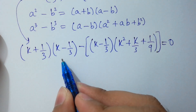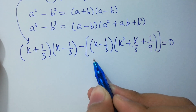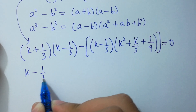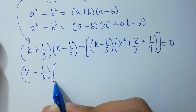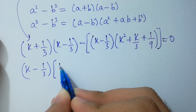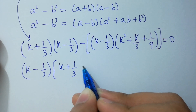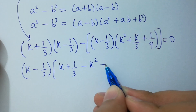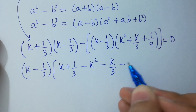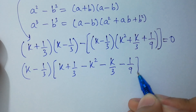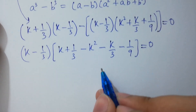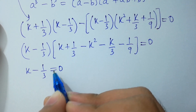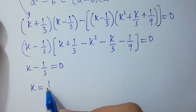Here, k minus 1 over 3 and k minus 1 over 3 will be common. So k minus 1 over 3, times k plus 1 over 3, minus k squared minus k over 3 minus 1 over 9, equal to 0. Either k minus 1 over 3 equals 0, which gives k equal to 1 over 3.